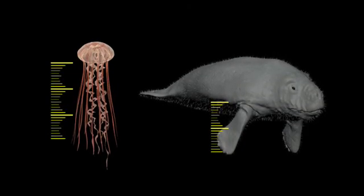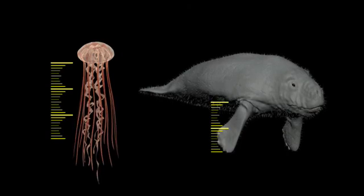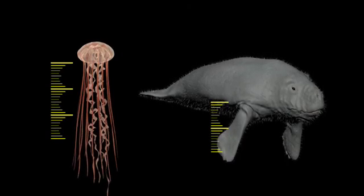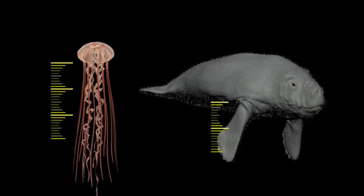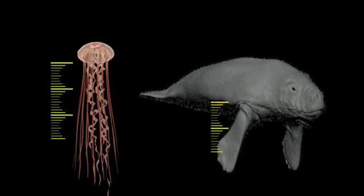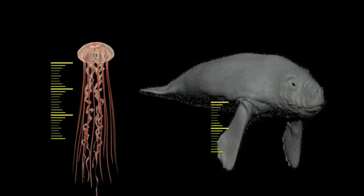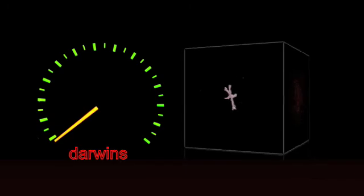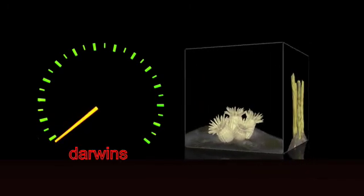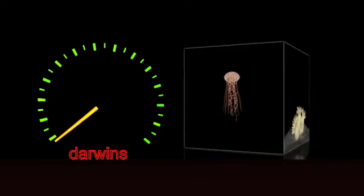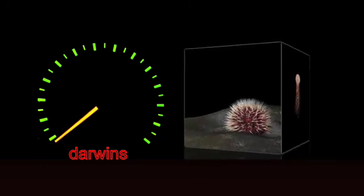It describes how fast some aspects or characteristics of an organism changes. One Darwin is a factor of 2.7 every million years. This factor is often used to evaluate whether there has been enough time since the beginning of life on Earth for the evolution of all the species who have ever lived.